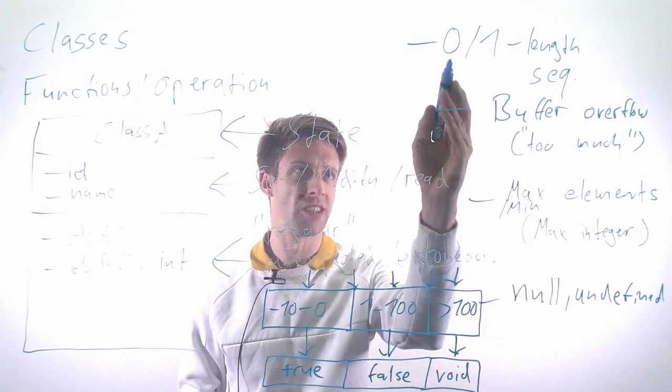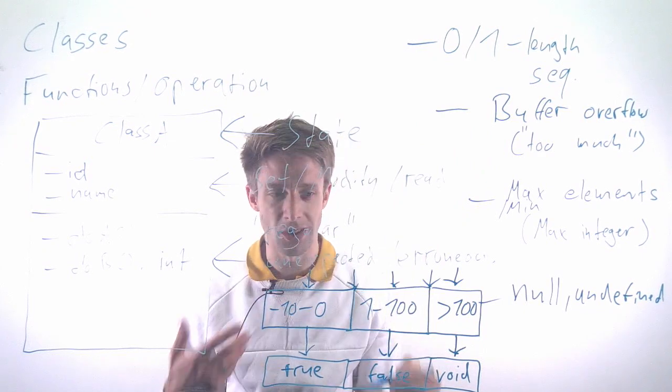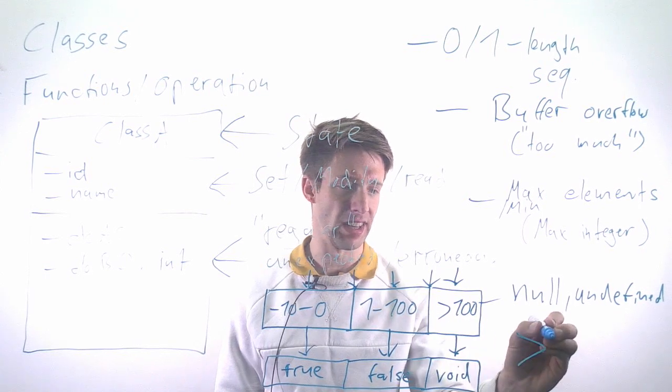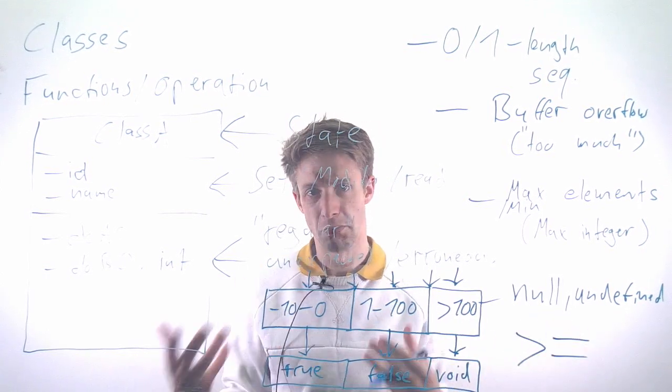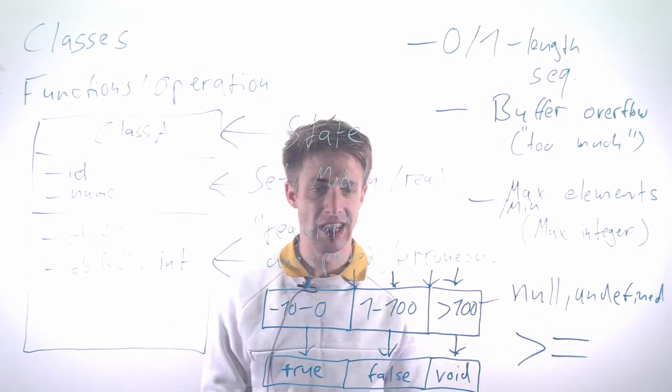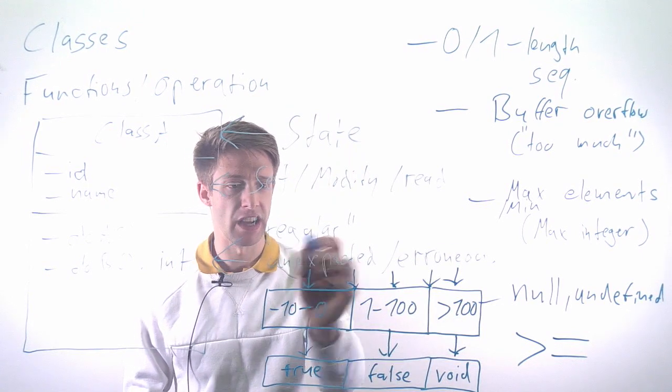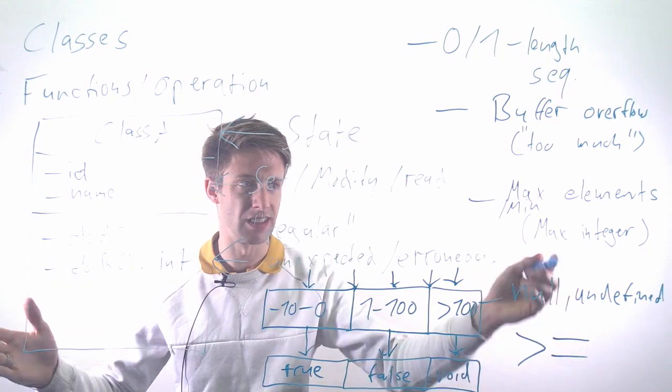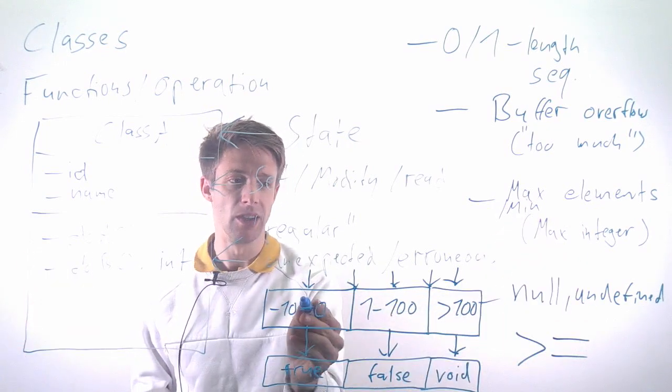Similar to the zero and one length issue, it happens so easily. For example, in your code, instead of larger than 100, you suddenly have larger equals—mistakes that happen very often. Instead of having to write a number of tests equal to the number of integers, you've broken this down into three classes.